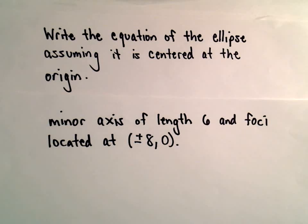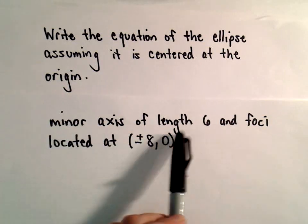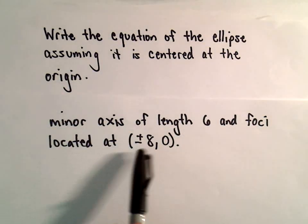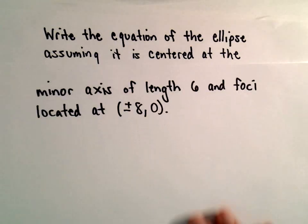All right, here we're going to find the equation of an ellipse that's centered at the origin. It's got a minor axis of length 6 and the foci are going to be located at (±8, 0).